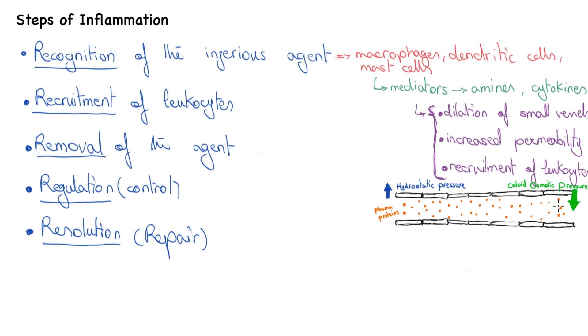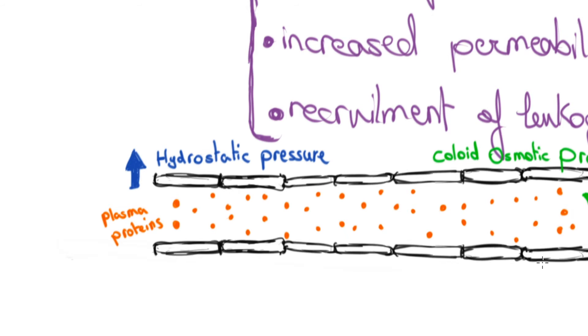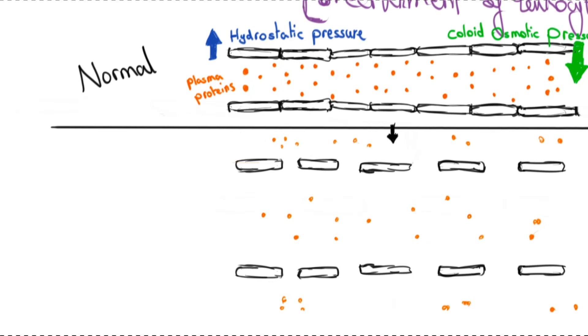So here we have a normal arteriole, and then we have an arteriole in case of inflammation. Please note how it's got dilated, and note the distance between each endothelial cell. The permeability has been increased.